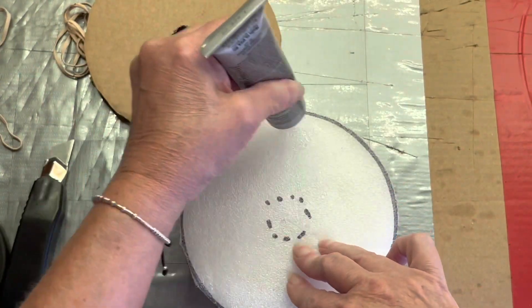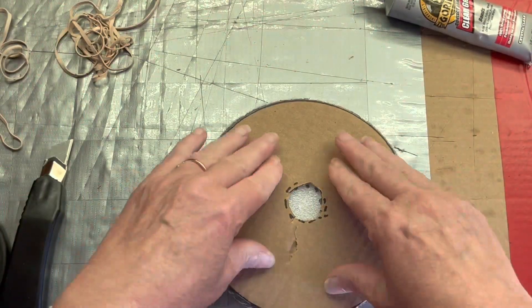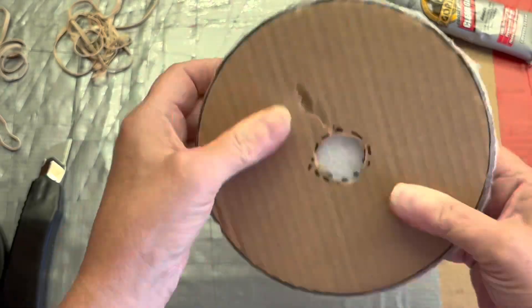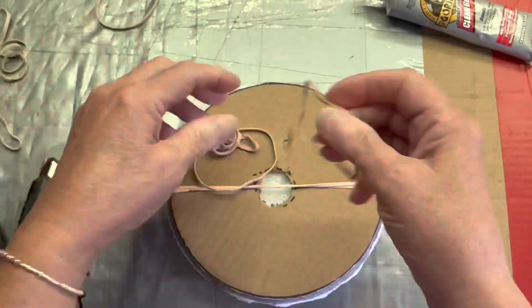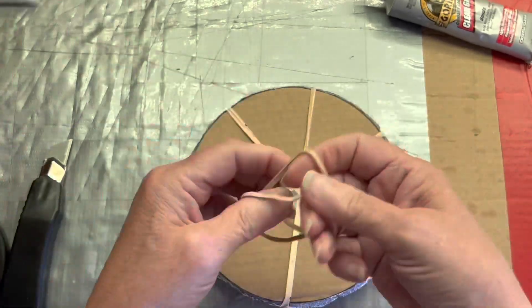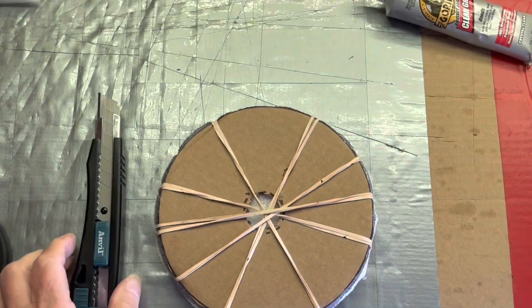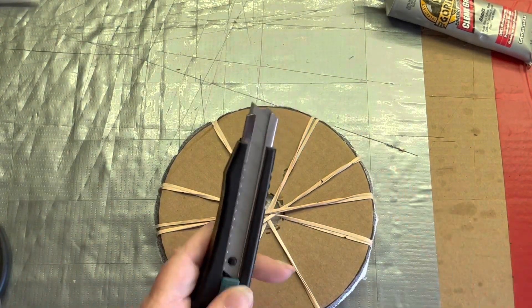Now let's apply some glue so everything stays in place. Now for the other side, a bunch of glue. Put those rubber bands back on and let it dry.